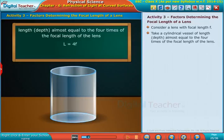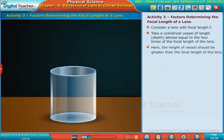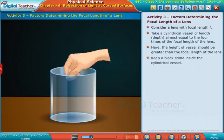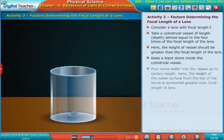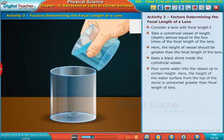Here, the height of the vessel should be greater than the focal length of the lens. Keep a black stone inside the cylindrical vessel. Pour some water into the vessel up to a certain height.